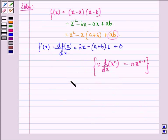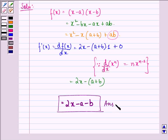So derivative is 2x - (a + b) and that can be written as 2x - a - b. So this is our answer to the question. I hope that you understood the question and enjoyed the session. Have a good day.